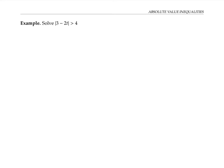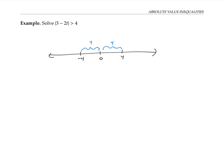Please pause the video and try the next problem on your own. Thinking in terms of distance, this inequality says that the distance between the expression three minus two t and zero is always bigger than four. If three minus two t has a distance bigger than four from zero, then it can't be in the region that's near zero. So either three minus two t is less than negative four, or three minus two t is bigger than four. I'll solve these two inequalities separately.